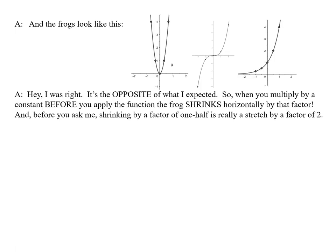And the frogs look like this. Hey, I was right. It's the opposite of what I expected. So when you multiply by a constant before you apply the function, the frog shrinks horizontally by that factor. And before you ask me, shrinking by a factor of half is really a stretch by a factor of 2.